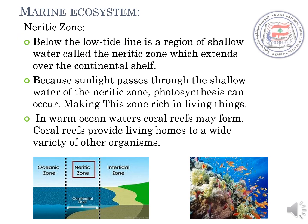Then we have the neritic zone. Below the low tide line is a region of shallow water called the neritic zone, which extends over the continental shelf. Because sunlight passes through the shallow water of the neritic zone, photosynthesis can occur, making this zone rich in living things. In warm ocean waters, coral reefs may form. Coral reefs provide living homes to a wide variety of other organisms. As you can see in the picture, it shows thousands and millions of fish and other sea organisms.